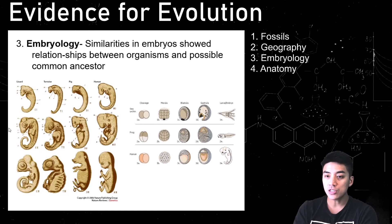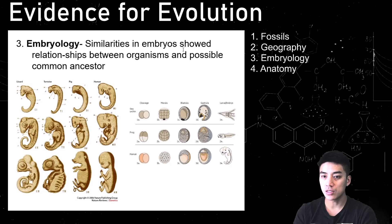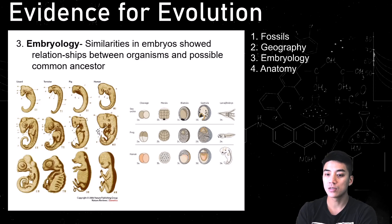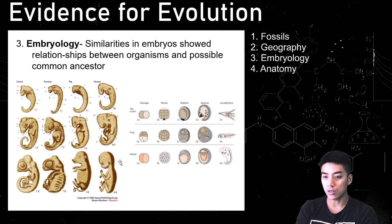Number three is embryology. When you look at embryos from different species, you can see there are a lot of similarities between them, suggesting we share a common ancestor with things like pigs, tortoises, and lizards. Here's a human embryo in early stages of development, next to a pig, a tortoise, and a lizard. As the embryos develop, they stay very similar — it's only when you see the adult form that you can see we're very different. But early on, the embryos start to grow in very similar ways.